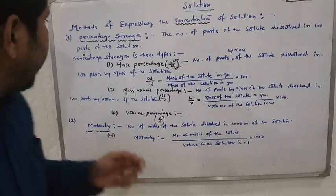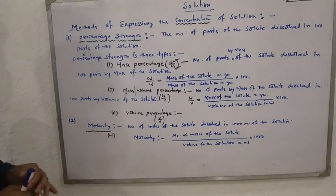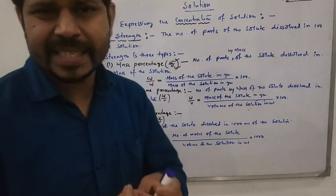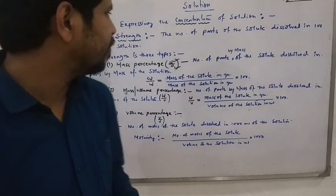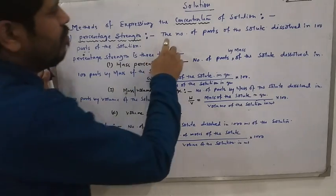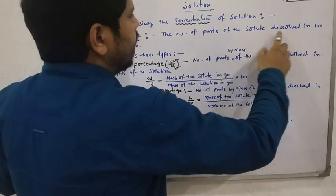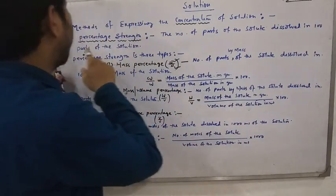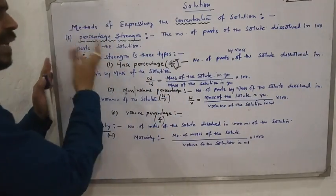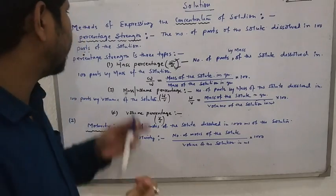The first concentration term is percentage strength. We have already learned this topic in class 9 — it is a very simple topic, kind of a revision of class 9–10. The definition of percentage strength is: the number of parts of the solute dissolved in 100 parts of the solution. Everything is counted in 100 because it is a percentage.